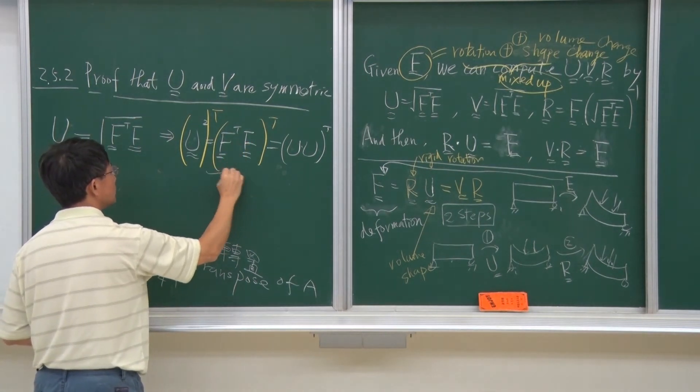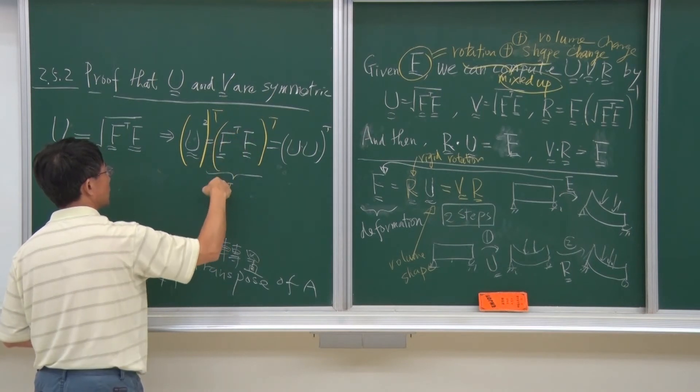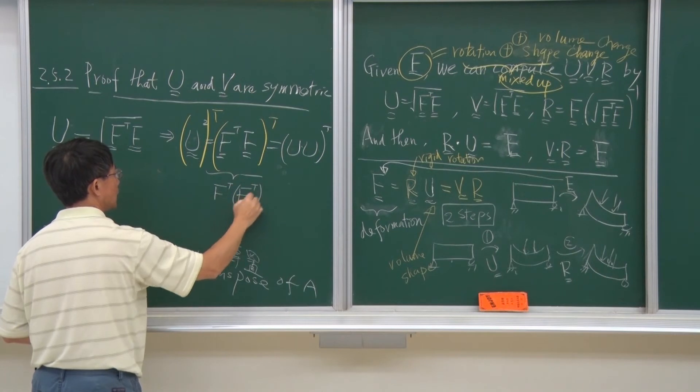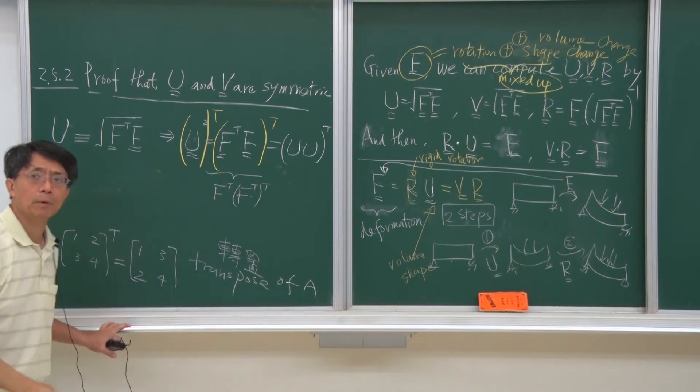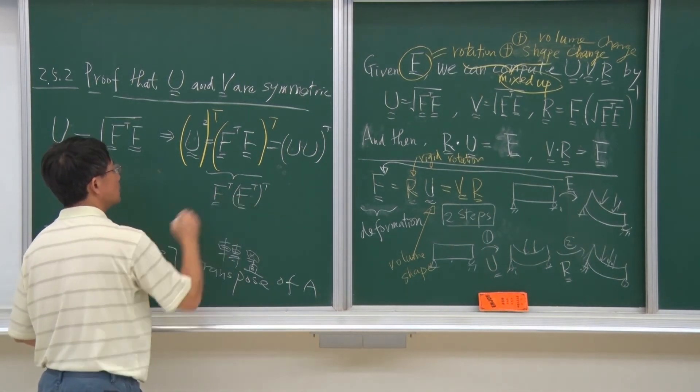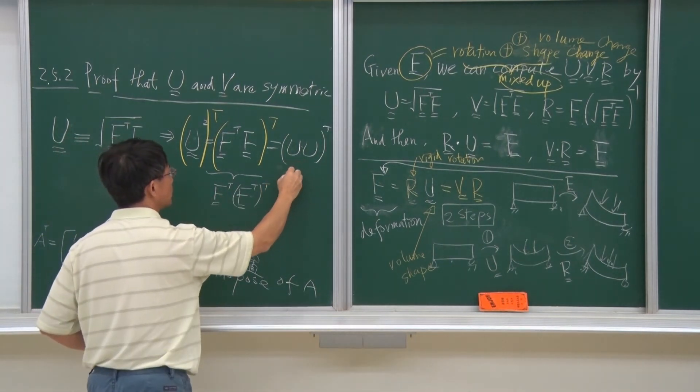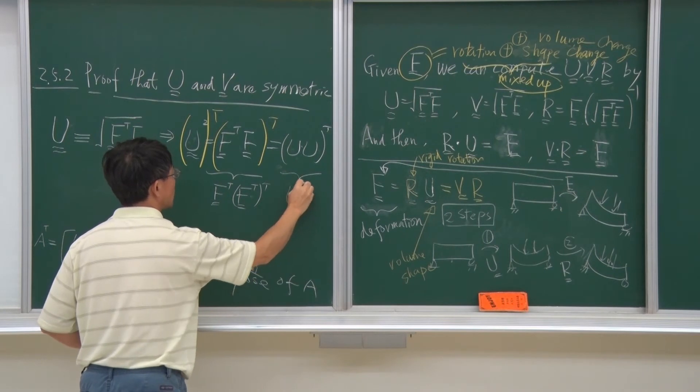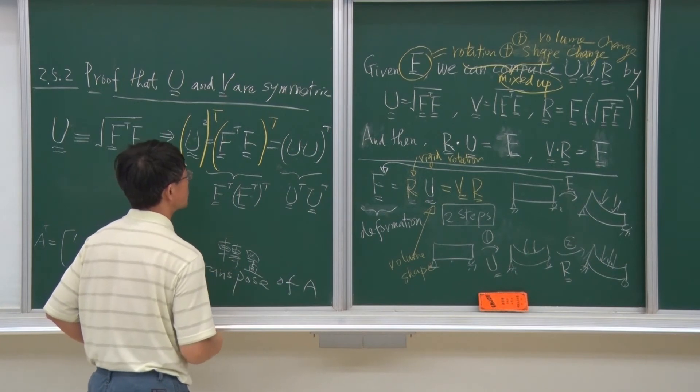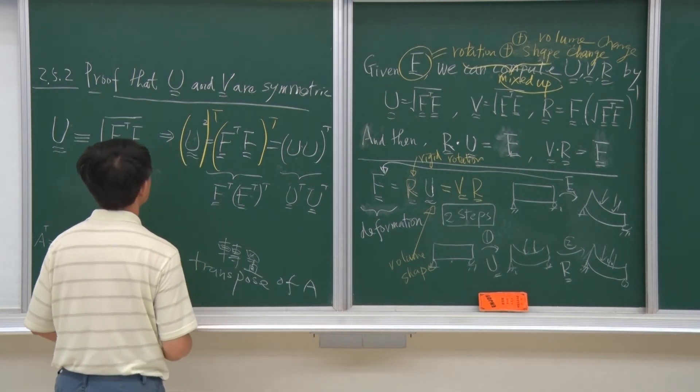And this one become Ftt. This is the basic property of the transpose of the transpose of a matrix. And then, this one will become Ut, U square.